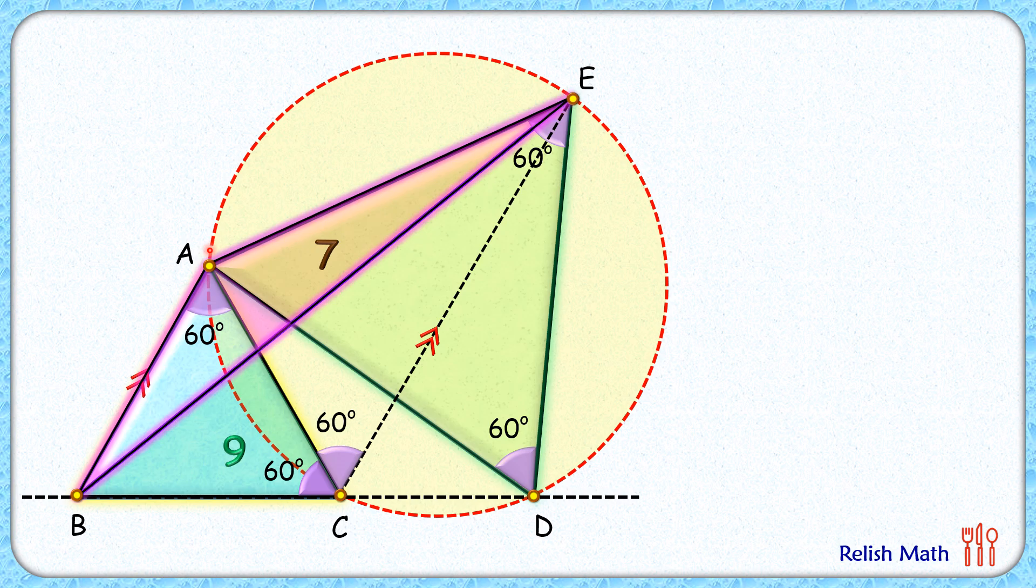Now if you look at this triangle ABE and if you look at this green triangle ACB, these two triangles are on the same base AB and these triangles are between the same parallel lines, so their height will be the same. So two triangles with the same base and same height, yes, their area has to be equal.